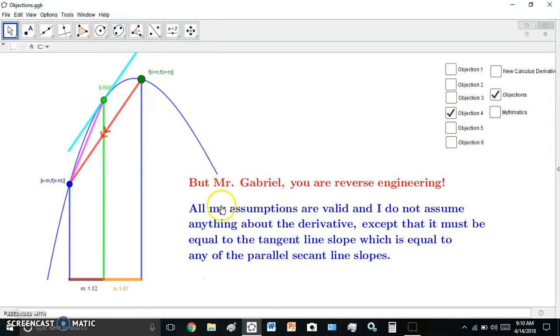And this objection here was made recently by somebody on a forum who took five years to understand that the new calculus derivative is sound, because it just shows you what the effect of brainwashing can do to an engineer and many other people. None of my assumptions assume anything about the derivative, except that the slope of the tangent line is equal to any of the many parallel secant lines. So no reverse engineering.